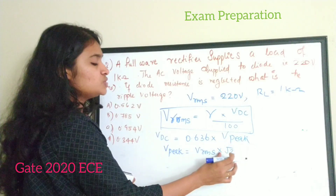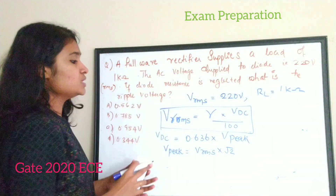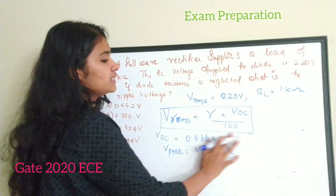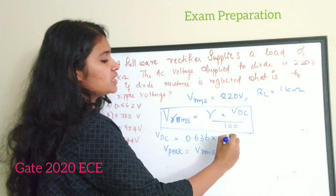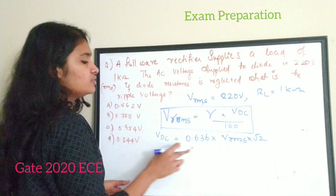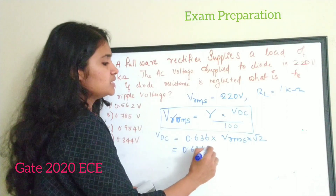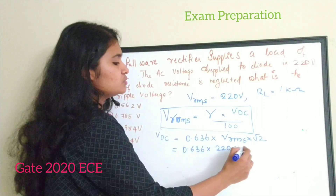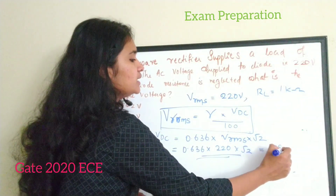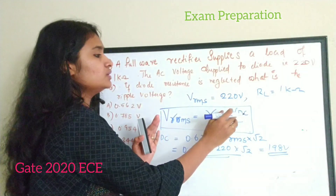Substituting V_peak as V_rms times root 2, we can directly find the answer since we know V_rms is 220 volt. So V_dc equals 0.636 times 220 times root 2. If you solve this you will get V_dc equal to 198 volt.